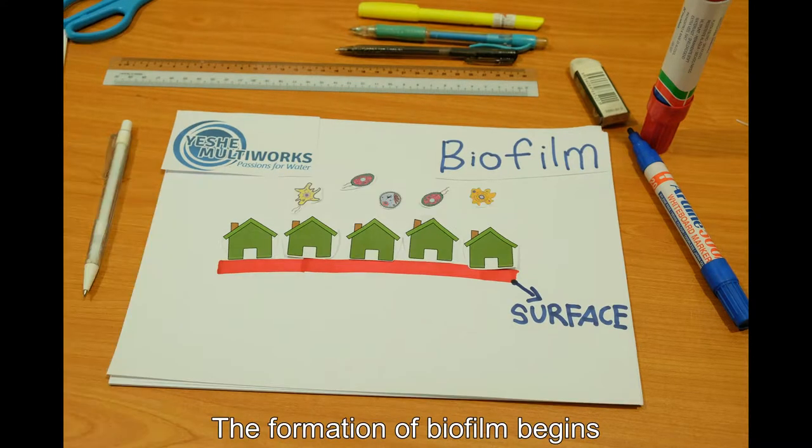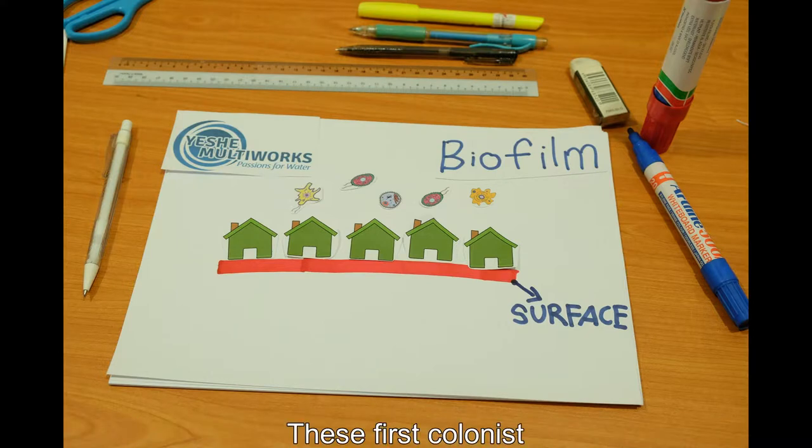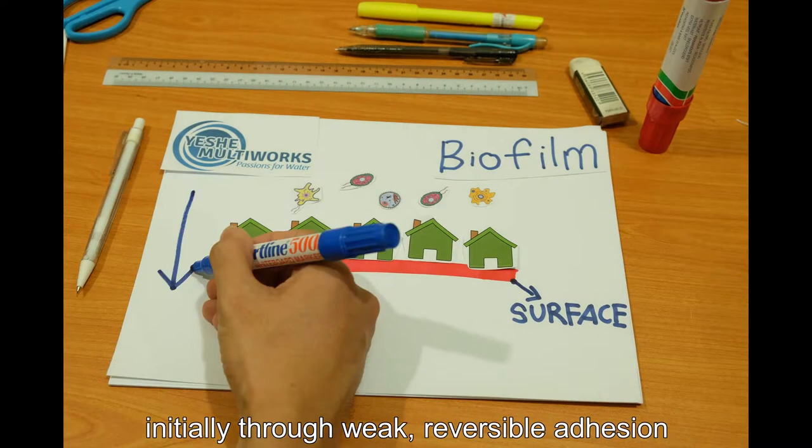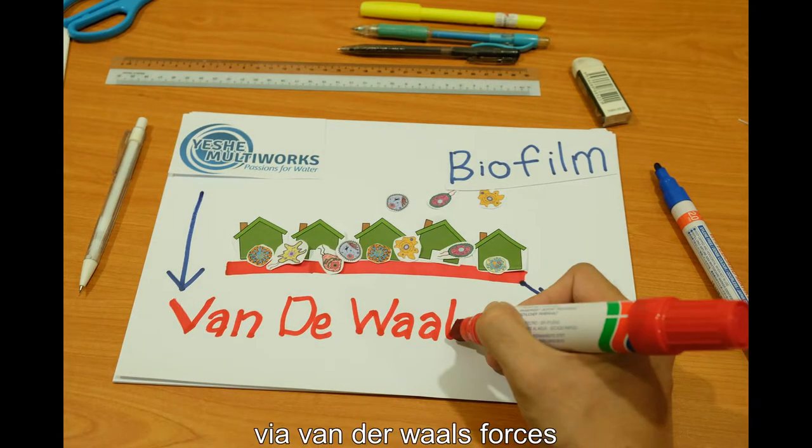The formation of biofilm began with the attachment of free-floating microorganisms to a surface. These first colonies stick to the surface, initially through weak, reversible adhesion via van der Waals forces.